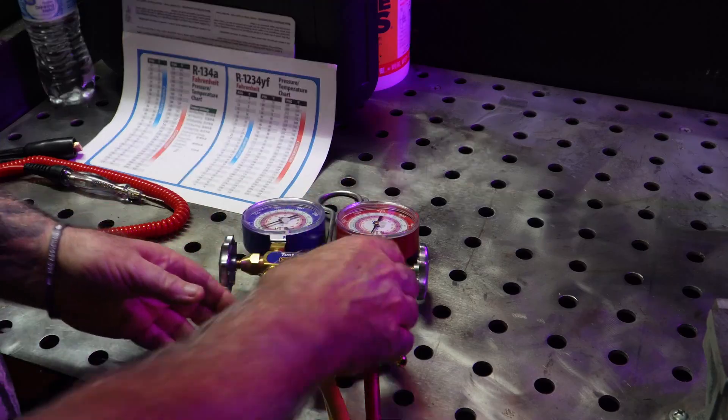Digital gauges: if you go through the program on these digital gauges, you can set them to all kinds of different refrigerants. You can use them on any of them, but make sure you remove any refrigerant from those lines before tying into something else, and any oil.